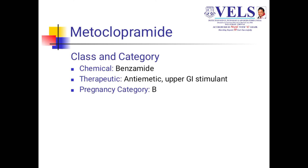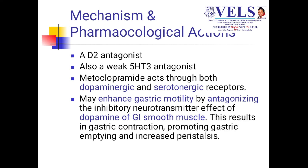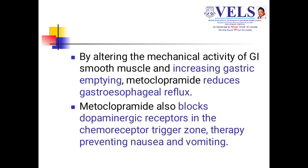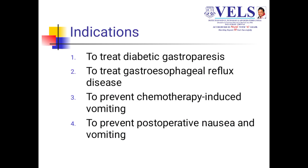Metoclopramide comes under the anti-emetic and upper GI stimulant category. Chemically it is a benzamide. Mechanism: it is a D2 antagonist and a weak 5-HT3 antagonist. It acts on both dopaminergic and serotonin receptors. It enhances gastric motility, antagonizes the neurotransmitter effect of dopamine on smooth muscle by altering mechanical activity in the GIT, increases gastric emptying, and reduces GERD. Metoclopramide also blocks D2 receptors in the CTZ, so it is used to treat nausea and vomiting.